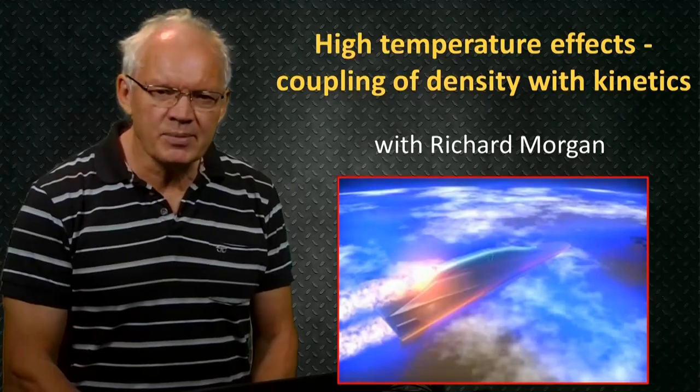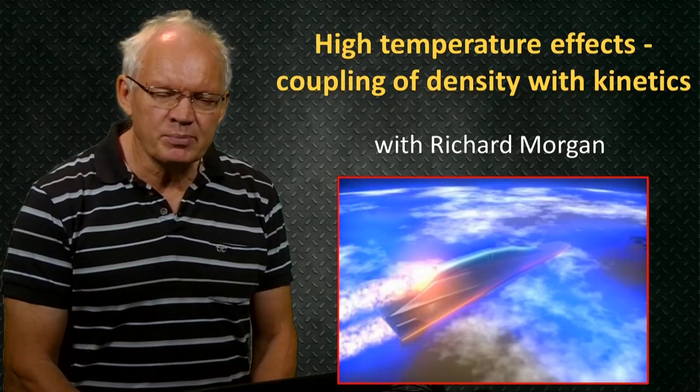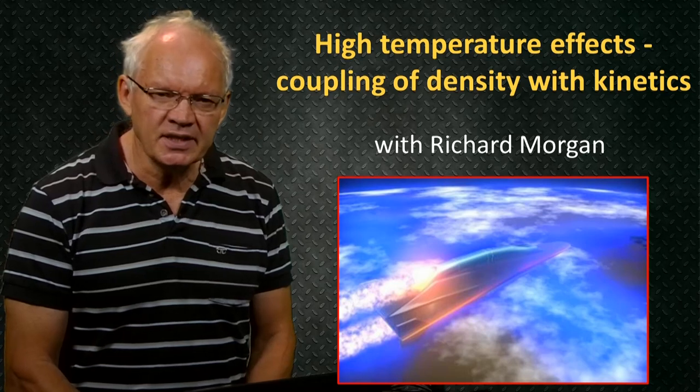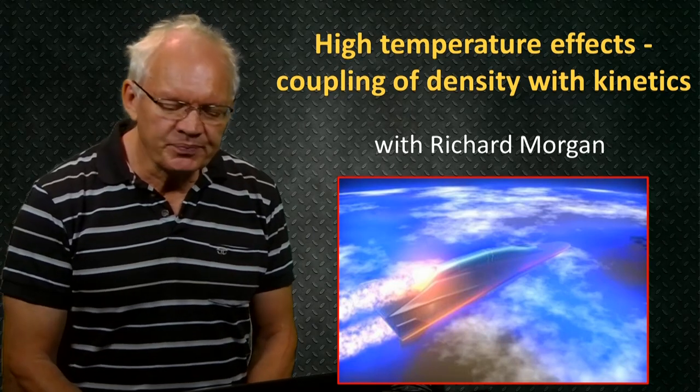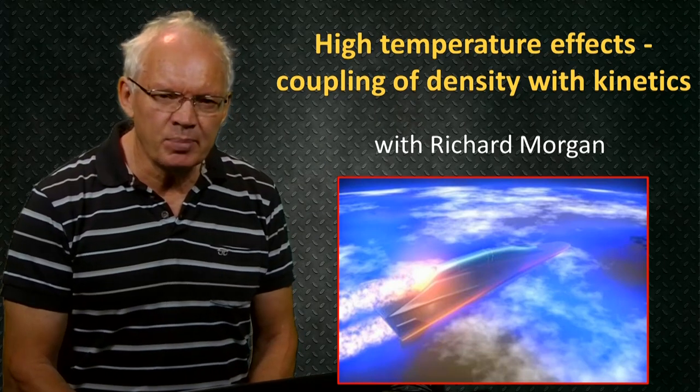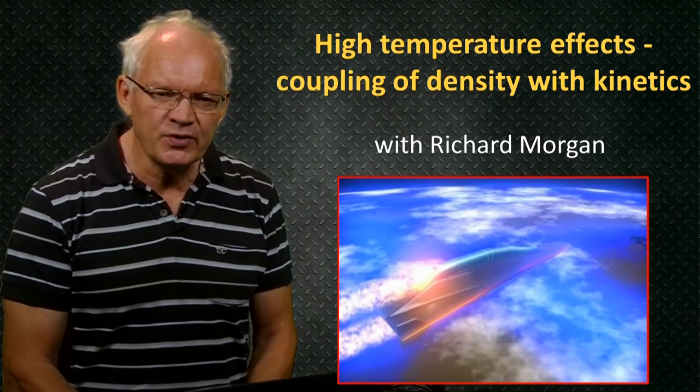In the previous lecture, we developed a chemical kinetic model that enables us to predict how much a gas is dissociating in a no-flow situation at a known temperature and density. What we need to do next is find a way of applying this model in a moving flow field.